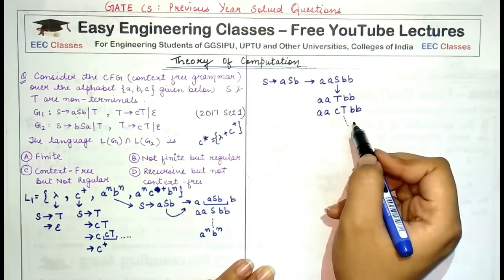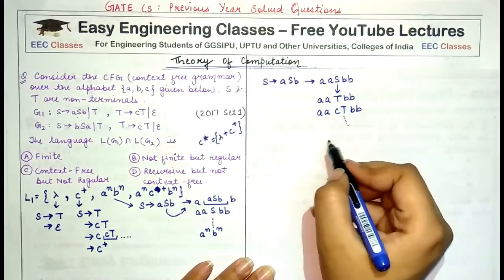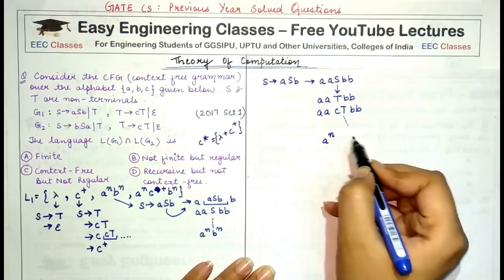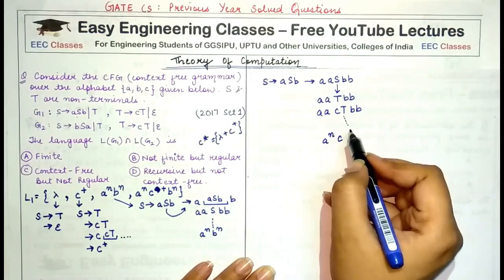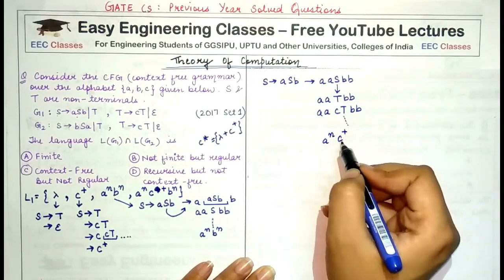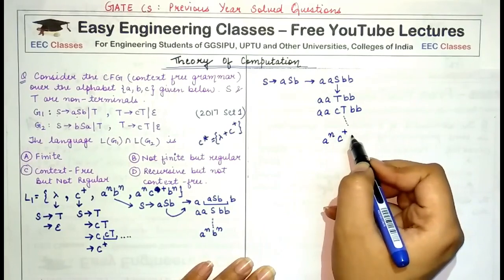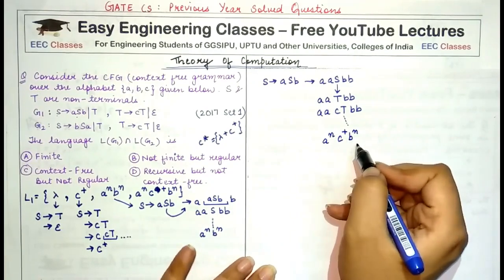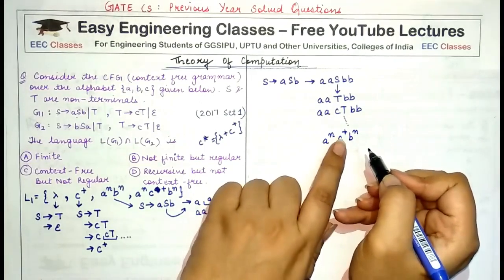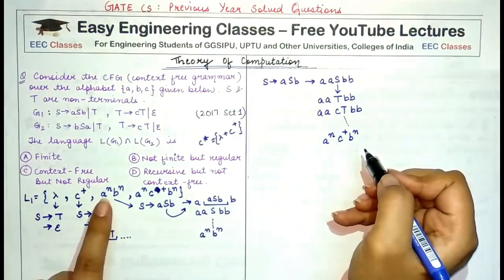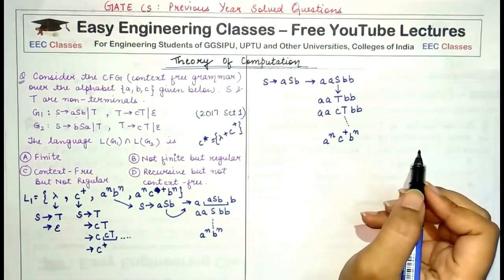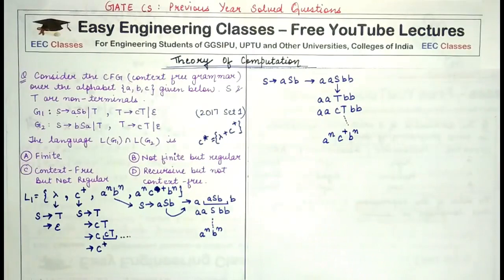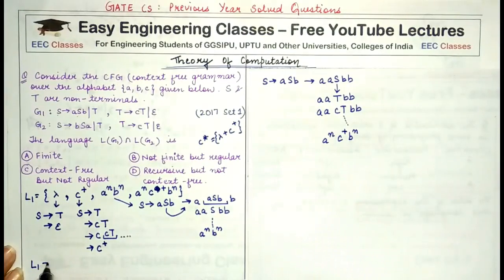As I continue replacing T with CT, more c's are introduced into the production. This becomes a^n, some number of c's — a single c or more — followed by an equal number of b's. When c is not present, that gives a^n b^n.